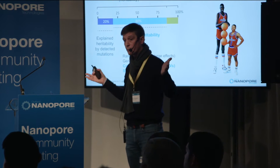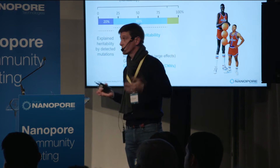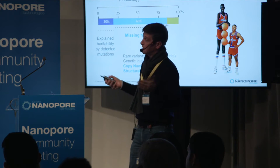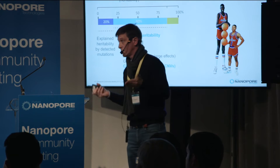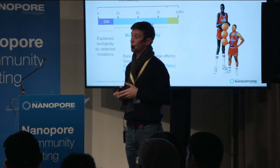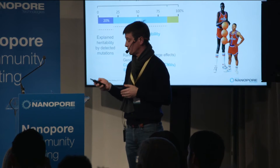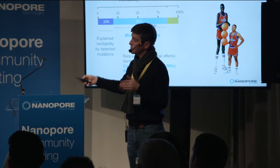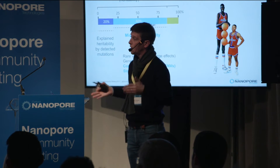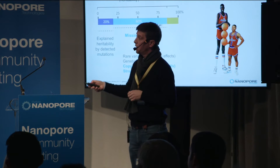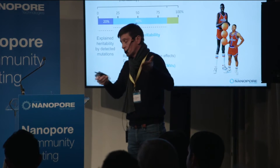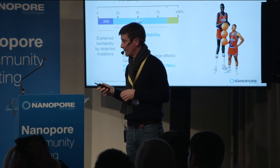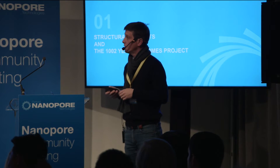There are a broad variety of potential sources that can explain the missing heritability. We can think about rare variants with large effects, genetic interactions, but also copy number variants and structural variants. In my team, we are interested in knowing a little bit more about the impact of copy number variants and structural variants on phenotypic variance.